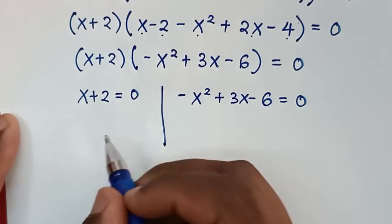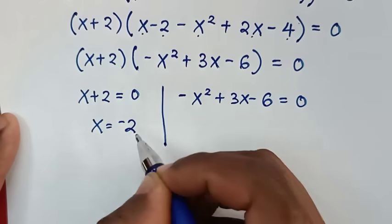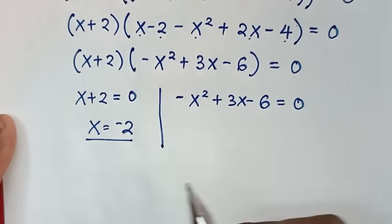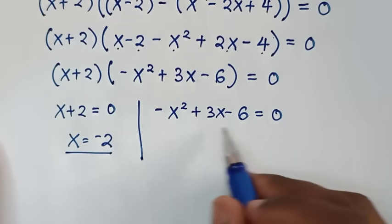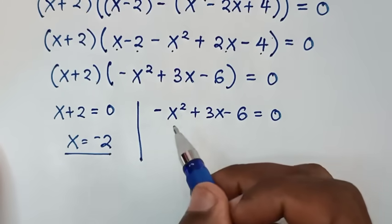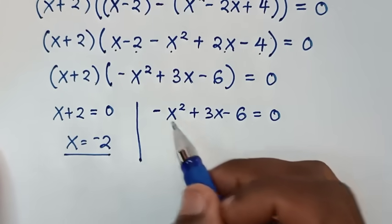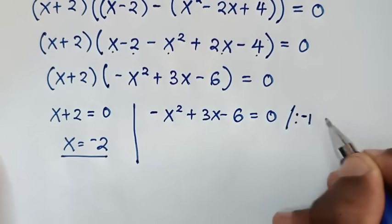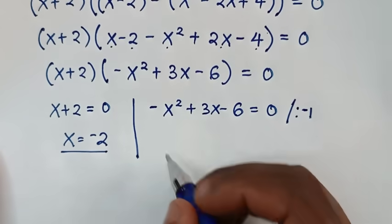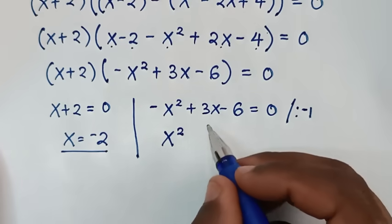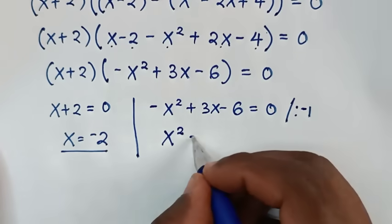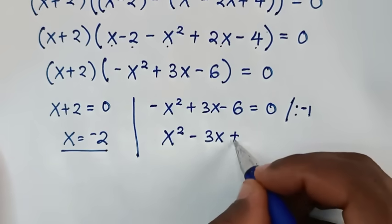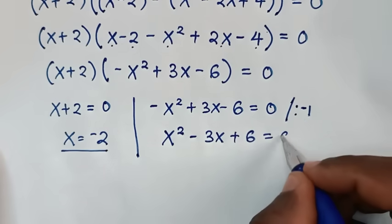From the first equation, x equals negative 2, which is the first real solution. For the quadratic equation, since x squared has a negative coefficient, we divide the whole equation by negative 1, giving x squared minus 3x plus 6 equals 0.